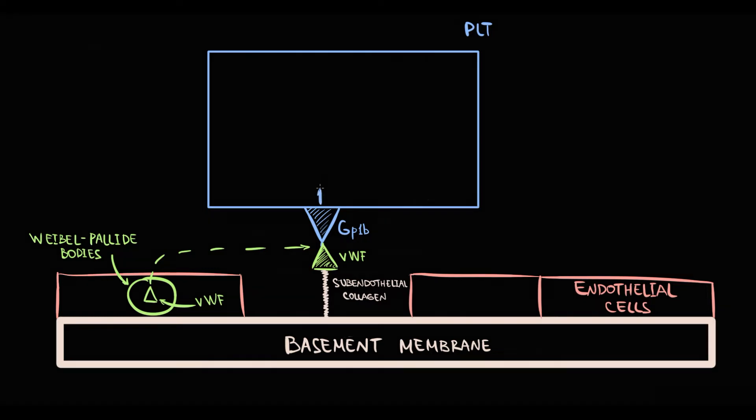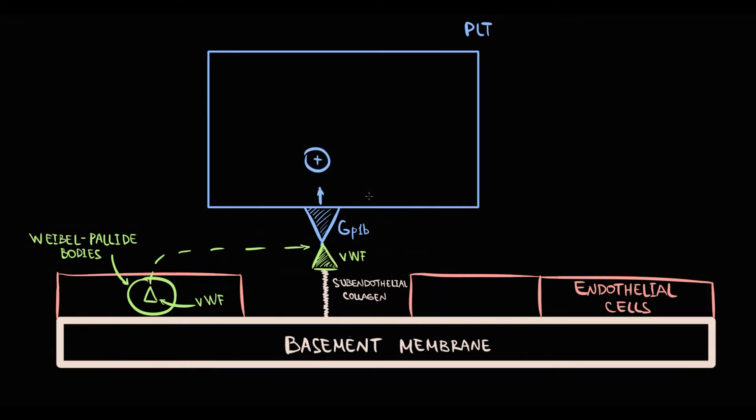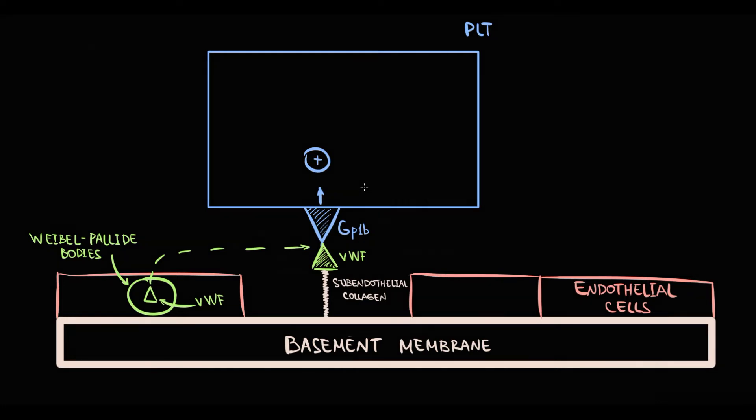After the adhesion, platelets become activated. In response to this, they undergo shape change that results in their degranulation. With degranulation, platelets release the content inside them, including the dense granules that contain ADP.